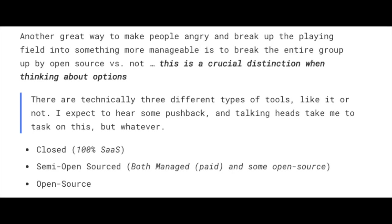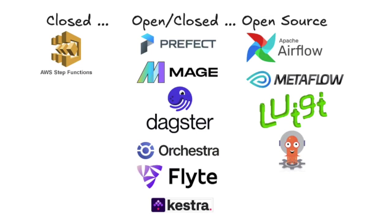There are three different types of tools when you look at this big list. First, closed source — 100% SaaS solutions. Second, the total opposite: Apache Airflow, which is totally open source. And then a large group in the middle — semi-open, semi-closed — tools that offer a paid managed version as well as an open source version. There's always debate about which features go where, and most companies keep some features behind a paywall.